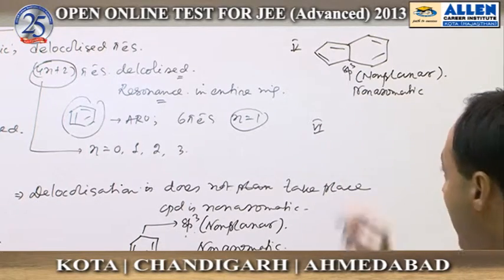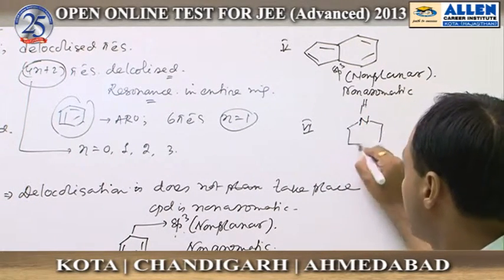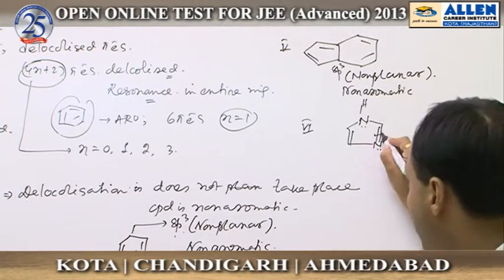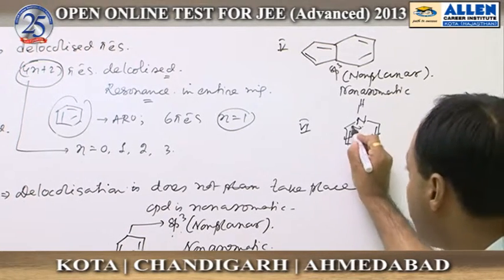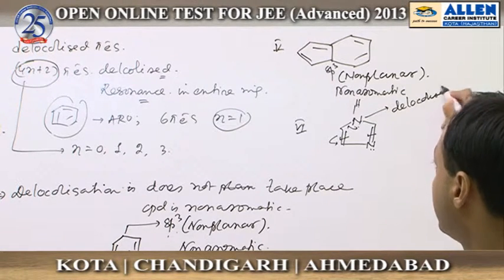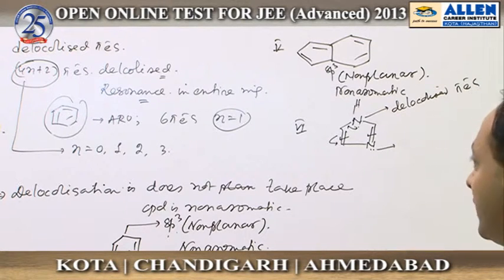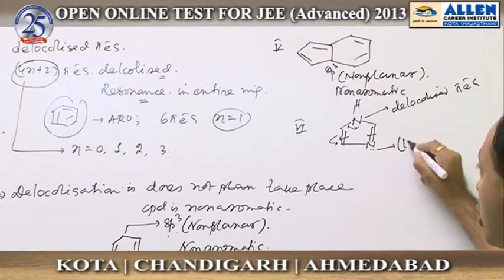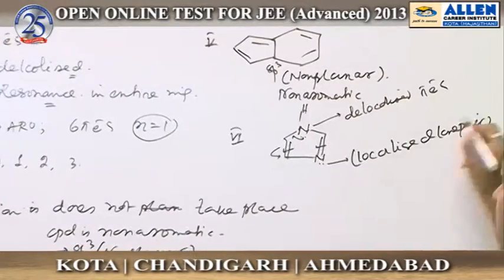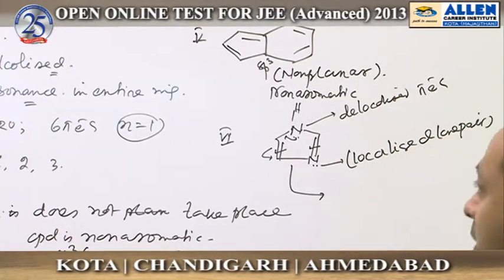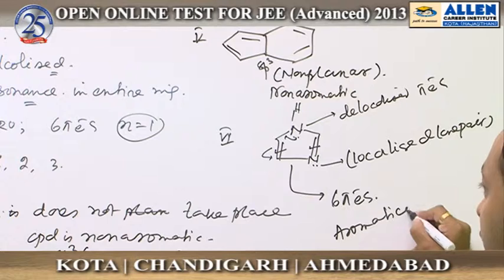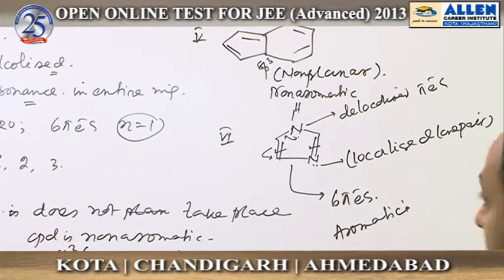Compound six is aromatic. It has two pi electrons, two pi electrons, and that lone pair participates in resonance giving delocalized pi electrons. However, the other lone pair does not participate in resonance — that is called a localized lone pair. Calculating the pi electrons inside the ring gives six pi electrons, which satisfies the conditions for an aromatic compound.